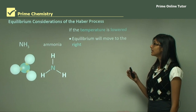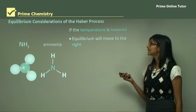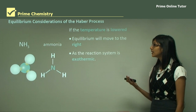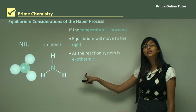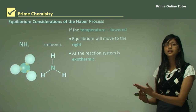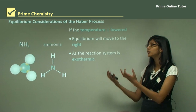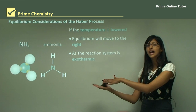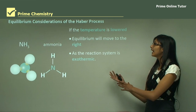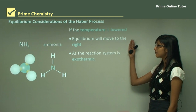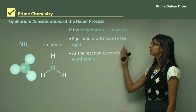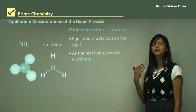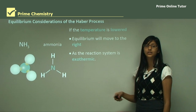If the temperature is lowered, the equilibrium will also move to the right. Because the reaction is exothermic, heat is produced as one of the products. If we reduce the amount of heat, the reaction moves to the side that produces more heat. Hence, if the temperature is lower, the equilibrium shifts to the right to produce more heat, due to the fact that the reaction is exothermic.